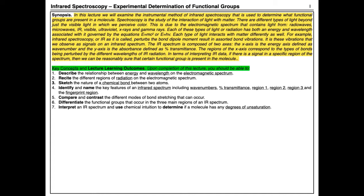The key learning outcomes: upon completion of this screencast, you should be able to describe the relationship between energy and wavelength on the electromagnetic spectrum, recite the different regions of radiation, sketch the nature of a chemical bond, identify key features of an IR spectrum including wave numbers, percent transmittance, regions 1, 2, 3, and the fingerprint region, compare different modes of bond stretching, differentiate functional groups in the three main regions, and interpret an IR spectrum to determine degrees of unsaturation.